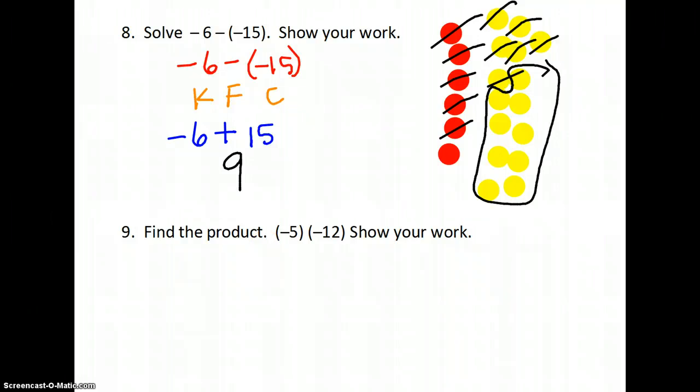Next one, we are going to find the product of -5 and -12. For our smiley face method, our eyes are closed, our nose is fine. So -5 times -12 is a positive 60.